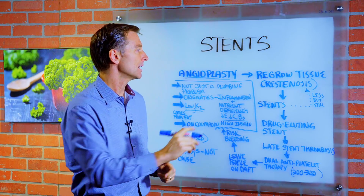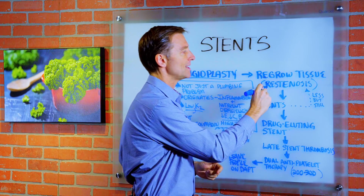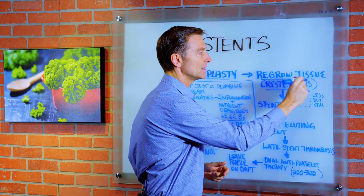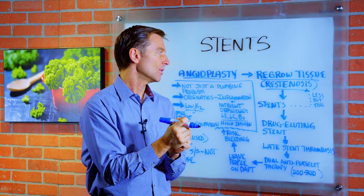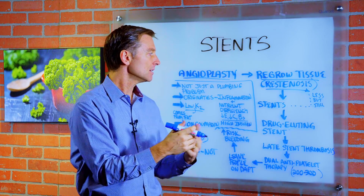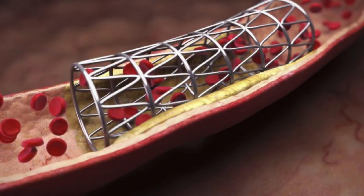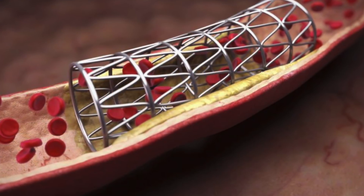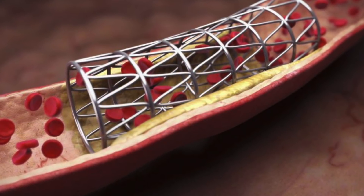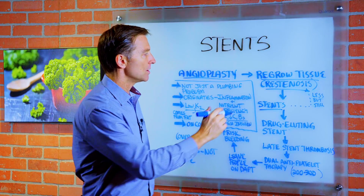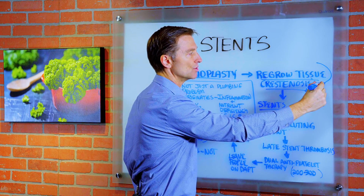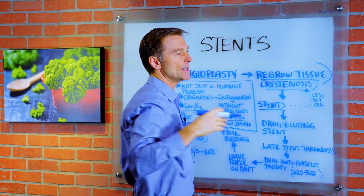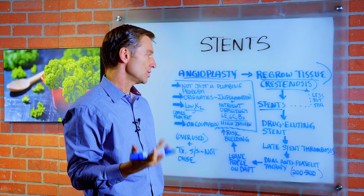The problem is you get a condition called restenosis, which is regrowing some of the tissue back. So then they developed something called a stent, which is a metal mesh that goes in the arteries and holds them open to create more space. It still created this regrowing of tissue, but not as much — though still too high.